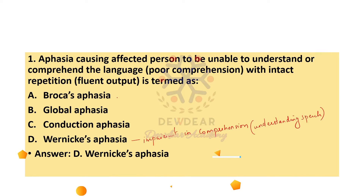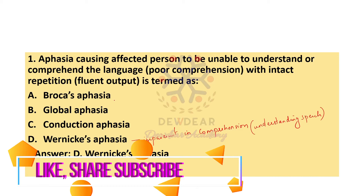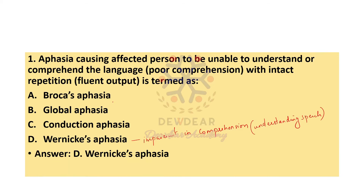Broca's aphasia relates to difficulty in language production. There will be limited language output — we can call it expressive aphasia. In Broca's aphasia, the speech output will be reduced and is diminished markedly.